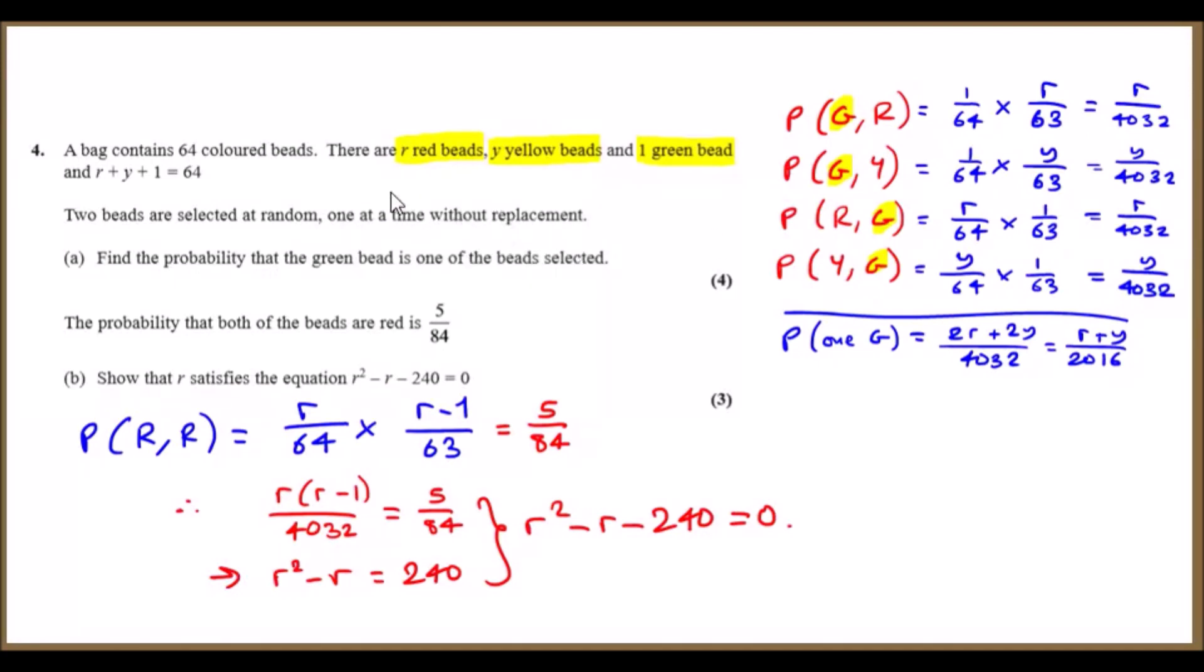This means that if the first pick was out of 64, then if you chose another bead from the bag, you don't replace it, so you'll be left with 63, which you'll see in a minute.